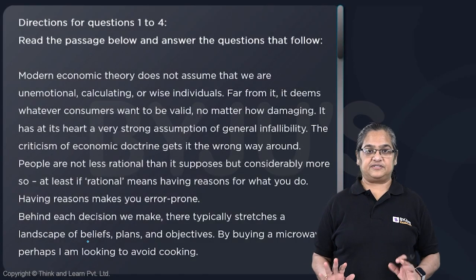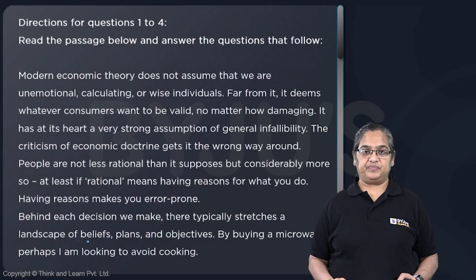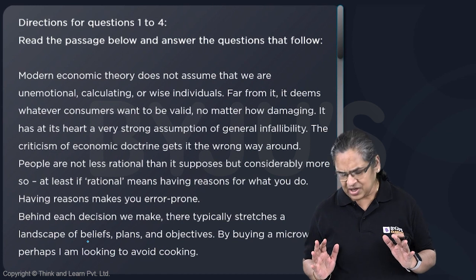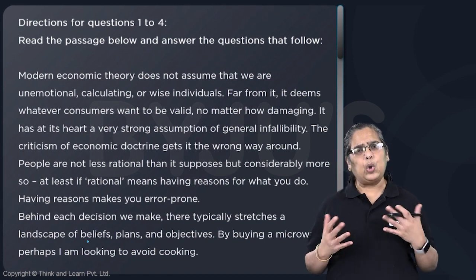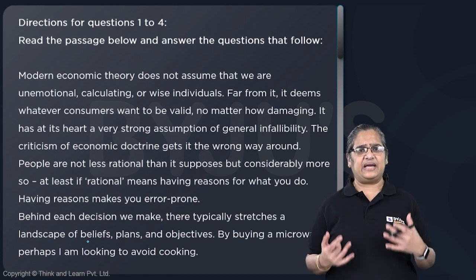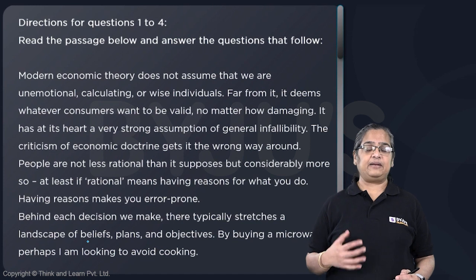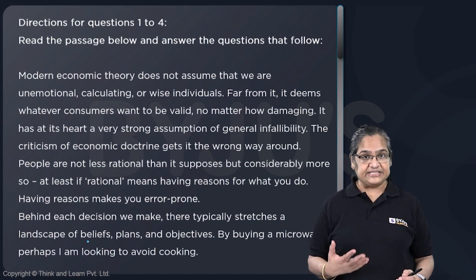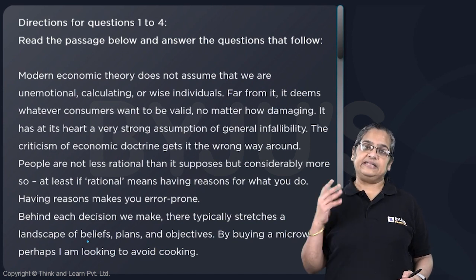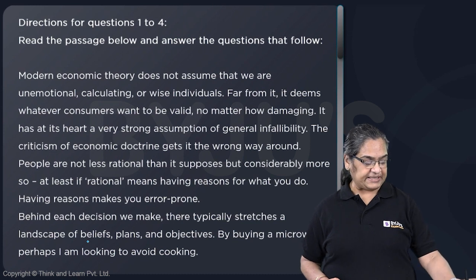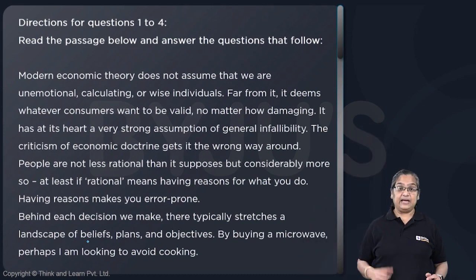Let's look at the first passage. This passage was on goals and impulses, and it said that because human beings are intelligent, they tend to make mistakes. Let's now look at the passage and summarize as we read.